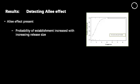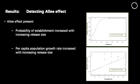Some results: on the x-axis is our release size, and on the y-axis is probability of establishment — we can see that it increased nicely as our release size increased the probability of establishment. We can also see that our release size and population growth rate also increases as release size increases.